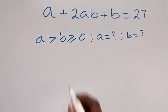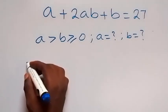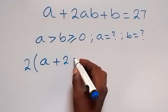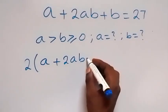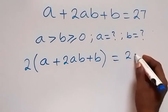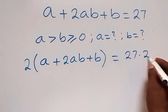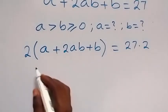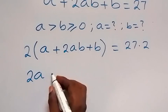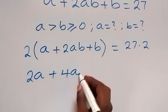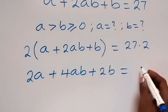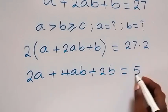Let's multiply both sides by 2, so we have 2 multiplied by (a plus 2ab plus b) equals to 27 times 2. Opening the bracket, this becomes 2a plus 4ab plus 2b, which equals 54.